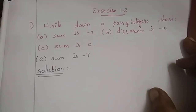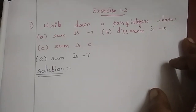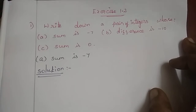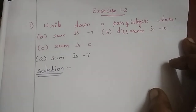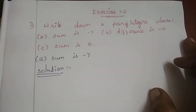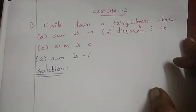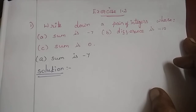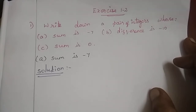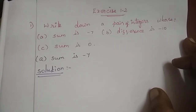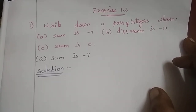Welcome to Max Academy. This is exercise number 1.2, first problem: write down a pair of integers whose sum is minus 7.